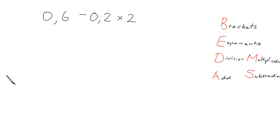Okay, so no brackets, no exponents, but I do have multiplication, so I have got to do that multiplication before I do the subtraction. How do I do multiplication with decimals? You should be very good at this by now.